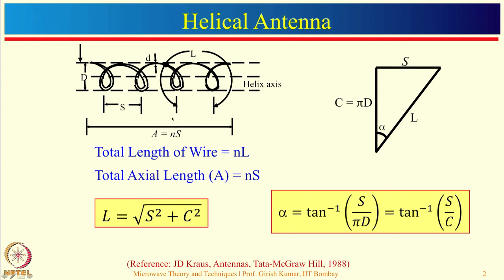If there are N turns in a helix, the total axial length will be equal to N times the spacing between one particular turn. For a single turn, L is the length of one turn, C equals pi*d which is the circumference of the helix, and S is the spacing. So L equals the square root of (S² + C²). The pitch angle alpha is defined as tan(alpha) = S / (pi*d), or equivalently tan inverse of S/C.